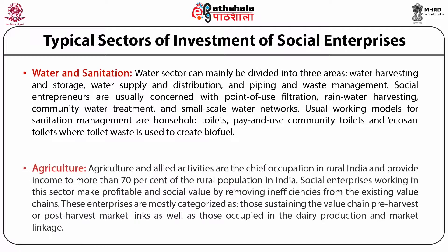Agriculture: Agriculture and allied activities are the chief occupation in rural India and provide income to more than 70% of the rural population. Social enterprises working in this sector create profitable and social value by removing inefficiencies from existing value chains. These enterprises are mostly categorized as those sustaining the value chain — pre-harvest or post-harvest market links — as well as those engaged in dairy production and market linkage.